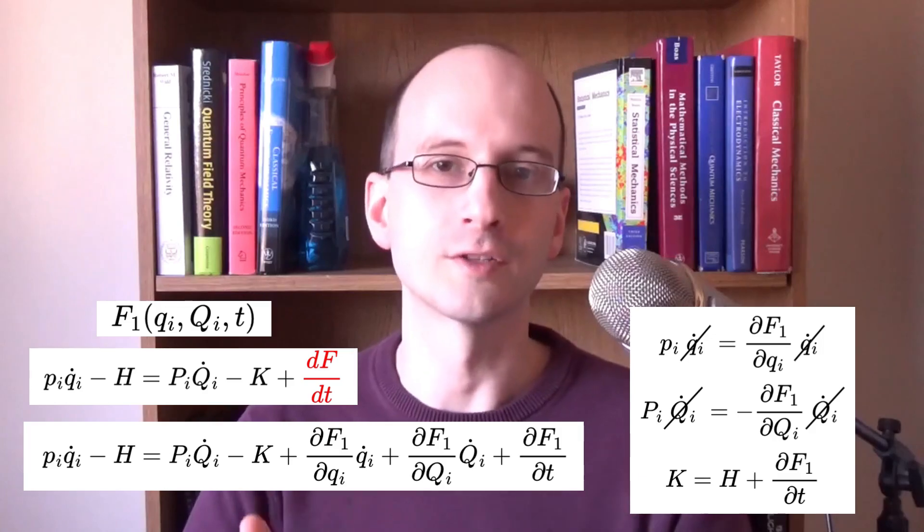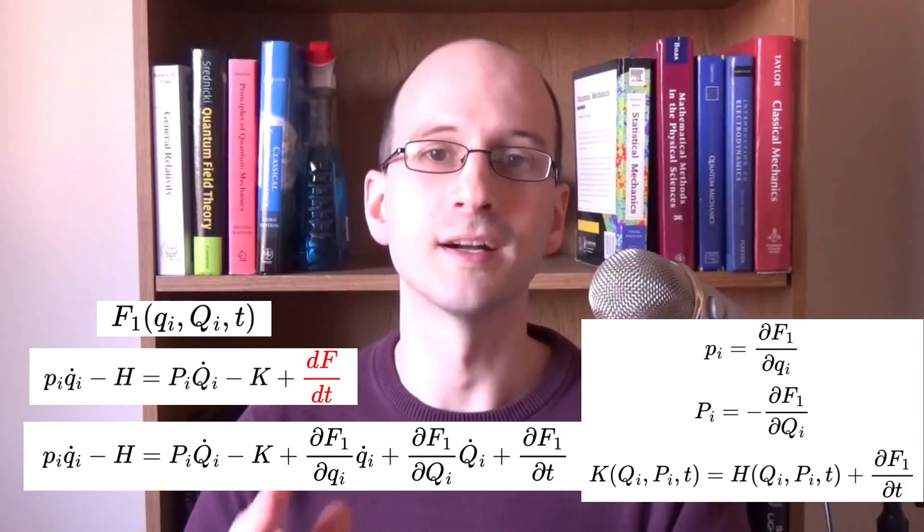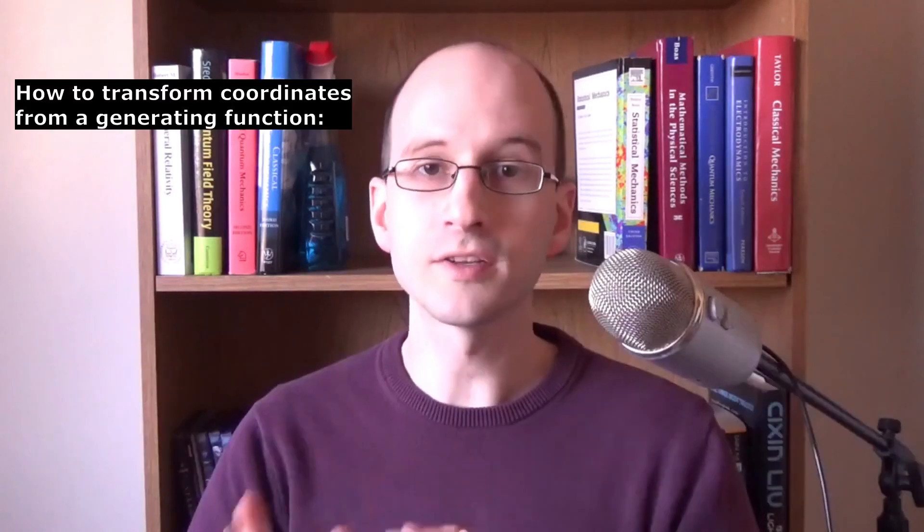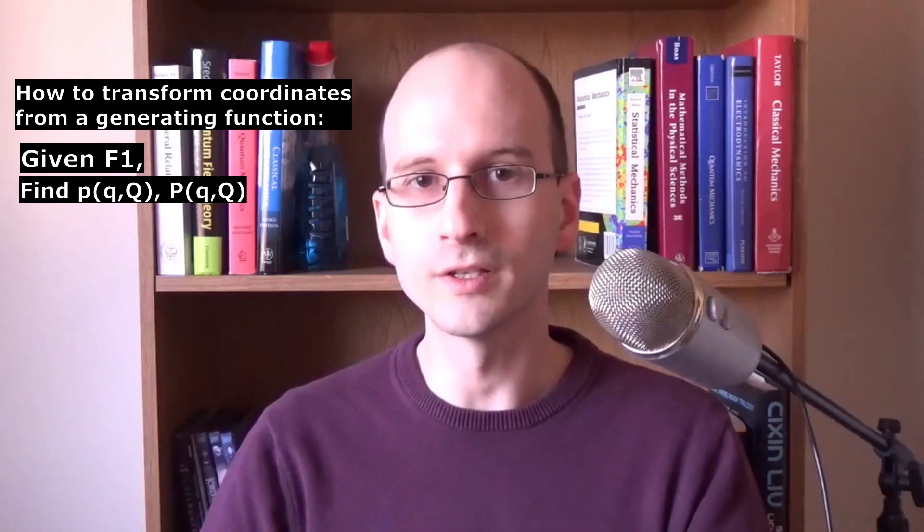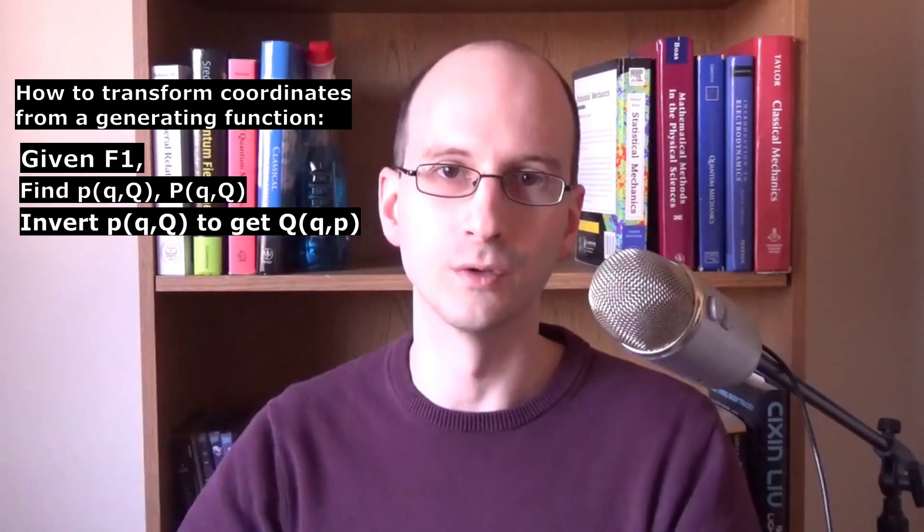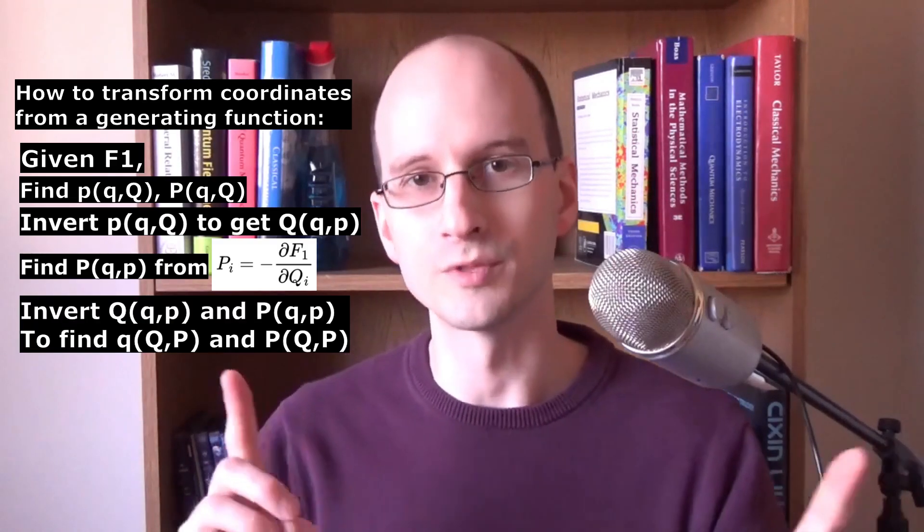These equations tell us how to transform the momenta and the Hamiltonian. We now have enough equations to find the new coordinates and momenta in terms of the old and the transformed Hamiltonian in terms of the new. The process goes like this: Given the generating function, find the old and new momenta in terms of the old and new coordinates. Invert the old momentum equation to find the new coordinates in terms of the old coordinate set. Substitute into the transformation equations to find the new momentum in terms of the old coordinate set. Invert these to find the old coordinates and momenta in terms of the new coordinate set and momenta, the df/dt in terms of the new momenta, and thus the new Hamiltonian in terms of the new coordinates and momenta. Thus, if you know the generating function, you can find the new dynamics and Hamiltonian.